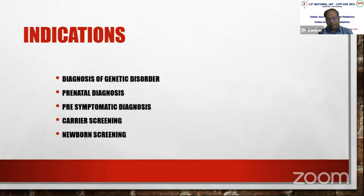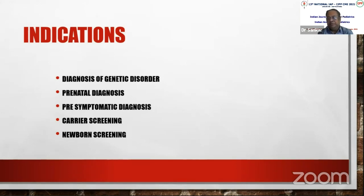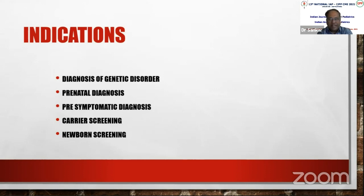Third is pre-symptomatic diagnosis, especially in adult-onset genetic disorders like Huntington's disease, spinocerebellar ataxia, and similar conditions. Sometimes pre-symptomatic diagnosis may need to be done, and similarly in adult-onset cancer and familial cancer-prone diseases, pre-symptomatic diagnosis is performed.